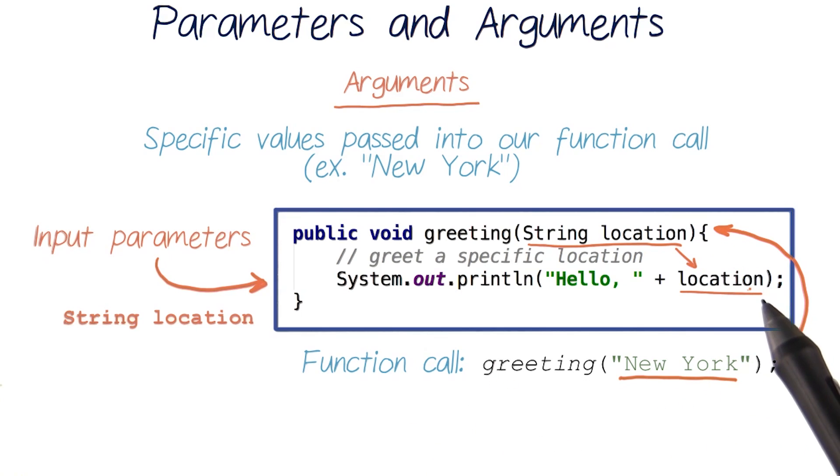Now if I put in the string New York as the argument in our function call, Java will look at our function definition and assign this value to our string location. And our function call will print out a greeting that's unique to this location. Hello, New York.